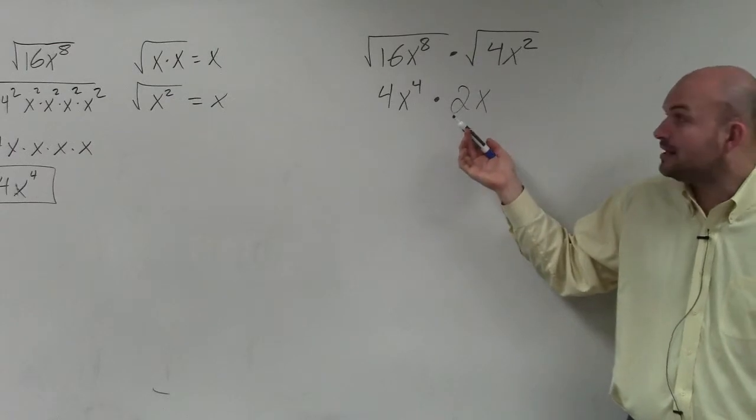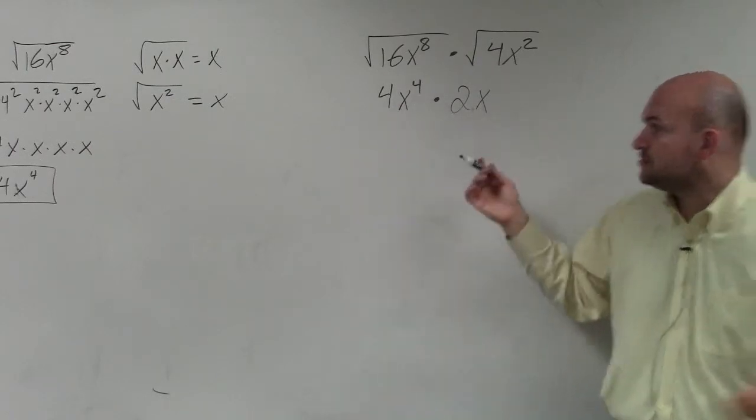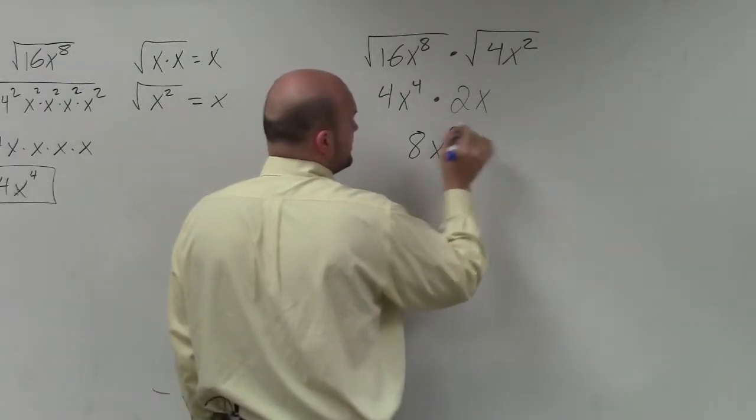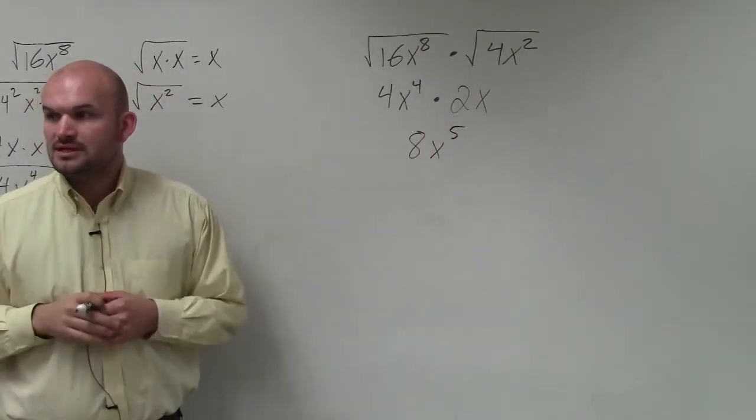And hopefully you guys remember multiplying exponents. We multiply 4 times 2, which gives us 8. And x to the fourth times x is x to the fifth. That's it.